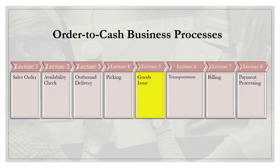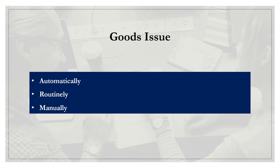Goods issue can be done in three different ways: automatically, routinely, or manually. Automatically means it happens during outbound delivery creation. Routinely means it happens at a certain time of the day or week depending on your situation. Manually means it's posted via an employee request at the time of their request.